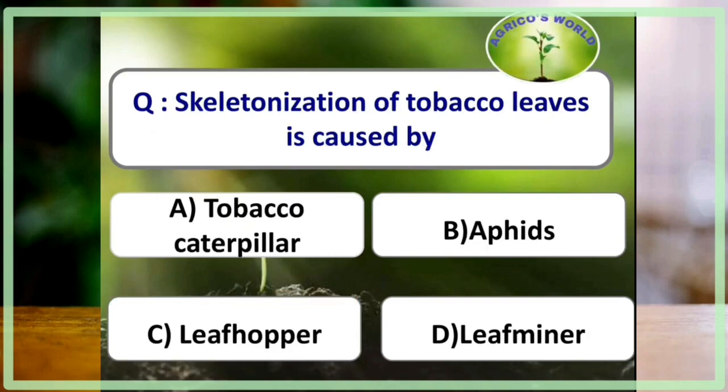Skeletonization of tobacco leaves is caused by the tobacco caterpillar. Initially the caterpillar scrapes the chlorophyll content, giving a papery white appearance of the leaf lamina. In later stages it becomes a voracious feeder and feeds the entire leaf, leaving the petiole and veins.